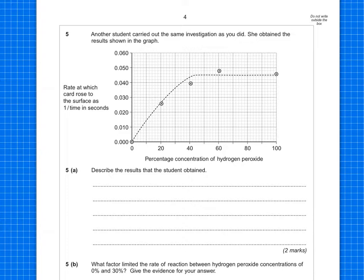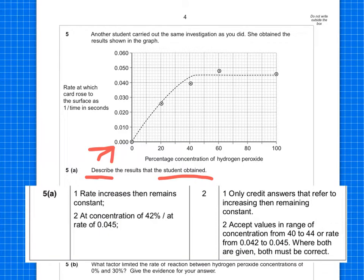Here's the graph I showed earlier. So you can see the results that you would get. And then it does say, describe the results that the student obtained. So you're going to use this information to describe and you get two marks for that description. Now, if they want two marks, you've got to say something about the curve. So the rate increases and then remains constant or plateaus. When though, you need to include the data as well. So you say, in this case, you can see a concentration of 42% where it plateaus. They would accept values in the ranges of 40 to 44, because it's not completely clear on the graph.